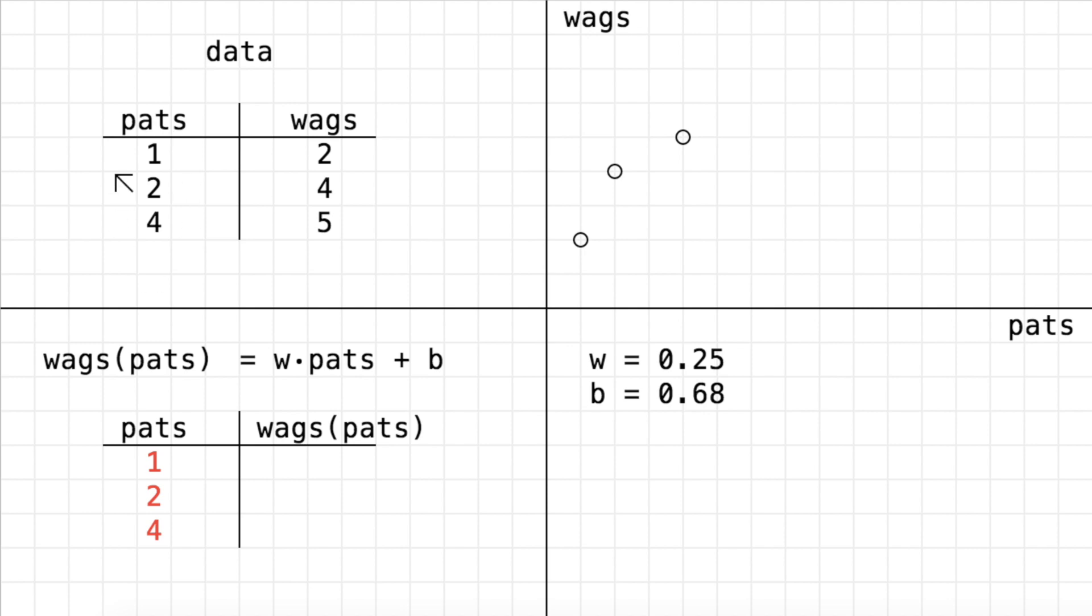Now why would we do that? Well, we pick these numbers of pats as input because we know the number of wags that go with each. So if we plug in 1 to our model, we want it to spit out a number close to 2. If we plug in 2, we want it to spit out a number close to 4, and so on. So that's why we pick these numbers to start our predictions off of.